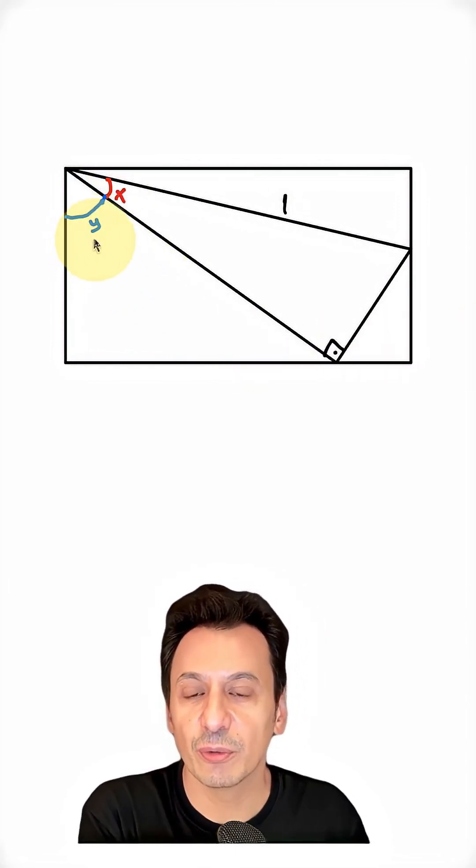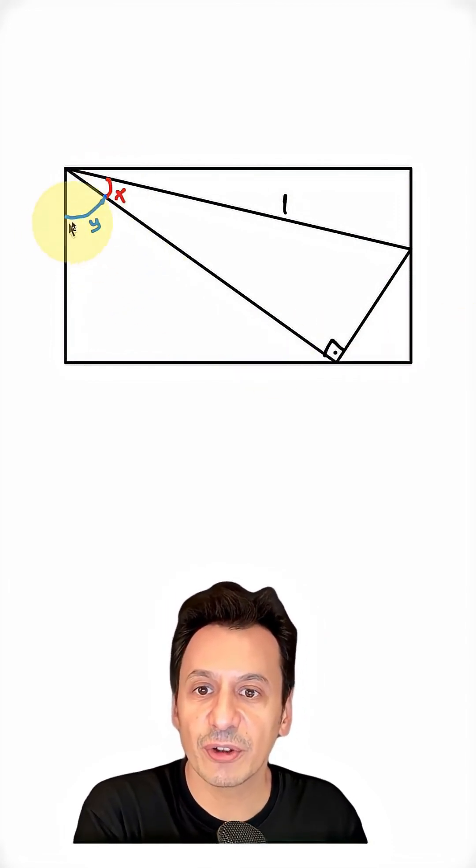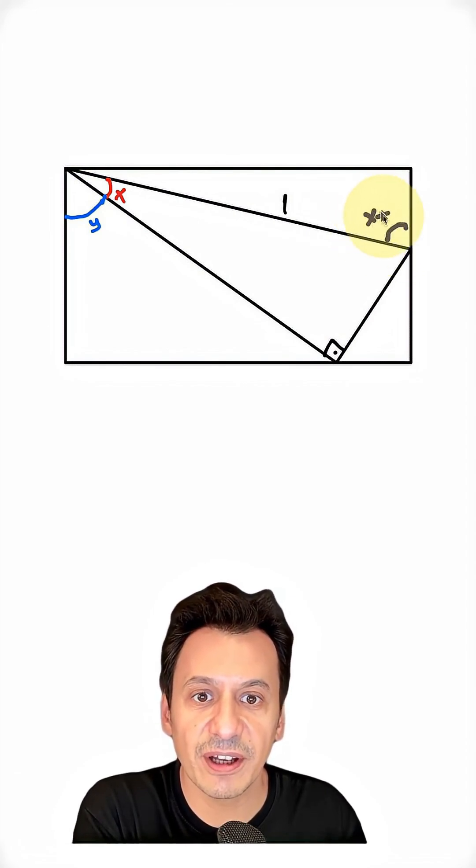Now here I see the angles x and y. From alternate interior angles, if this is x plus y, then this must also be x plus y.